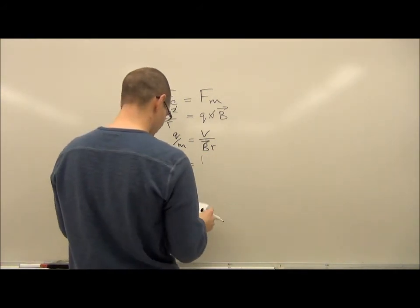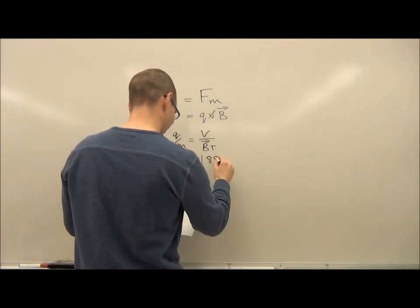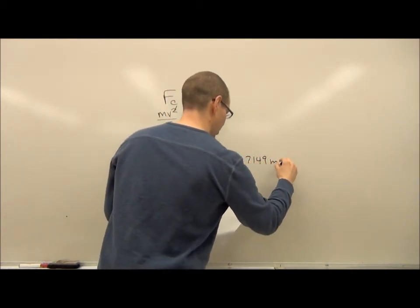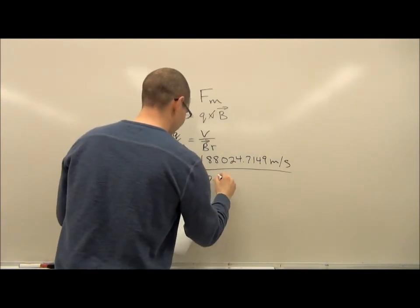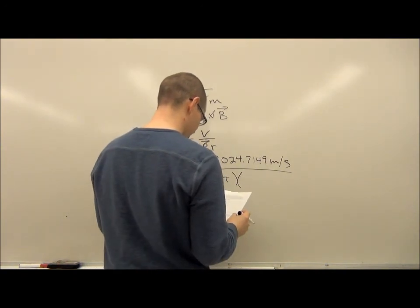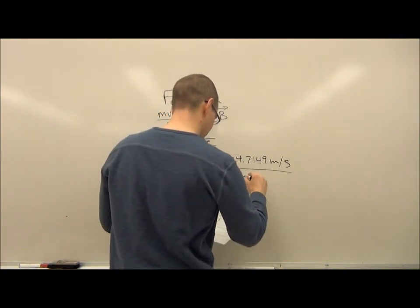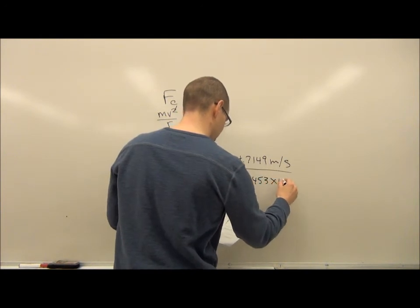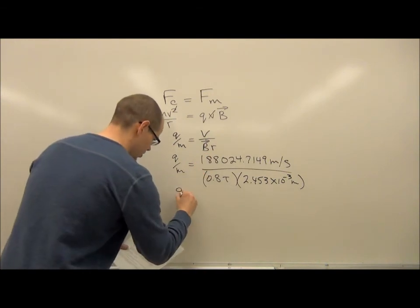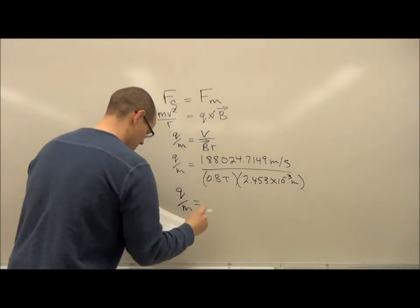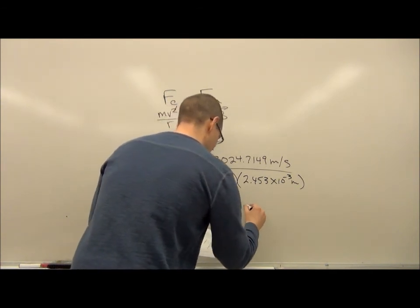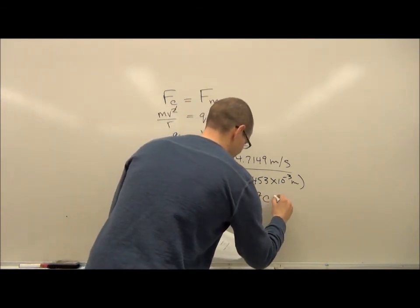The magnetic field is 0.8 teslas, and the radius here is in millimeters we need to convert. If you do that calculation there, you get a charge to mass ratio of 9.58 times 10 to the 7.